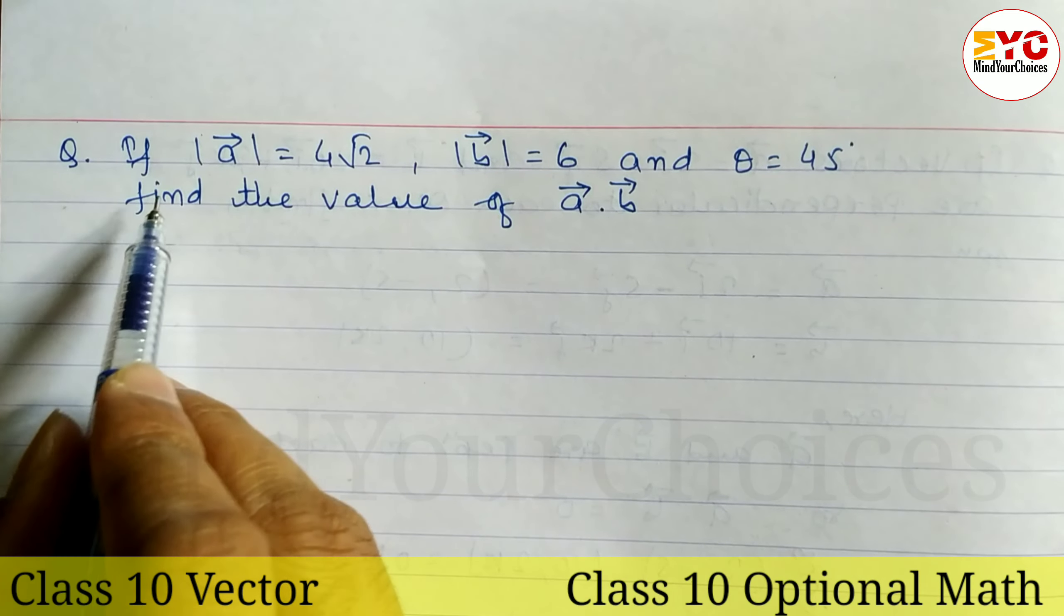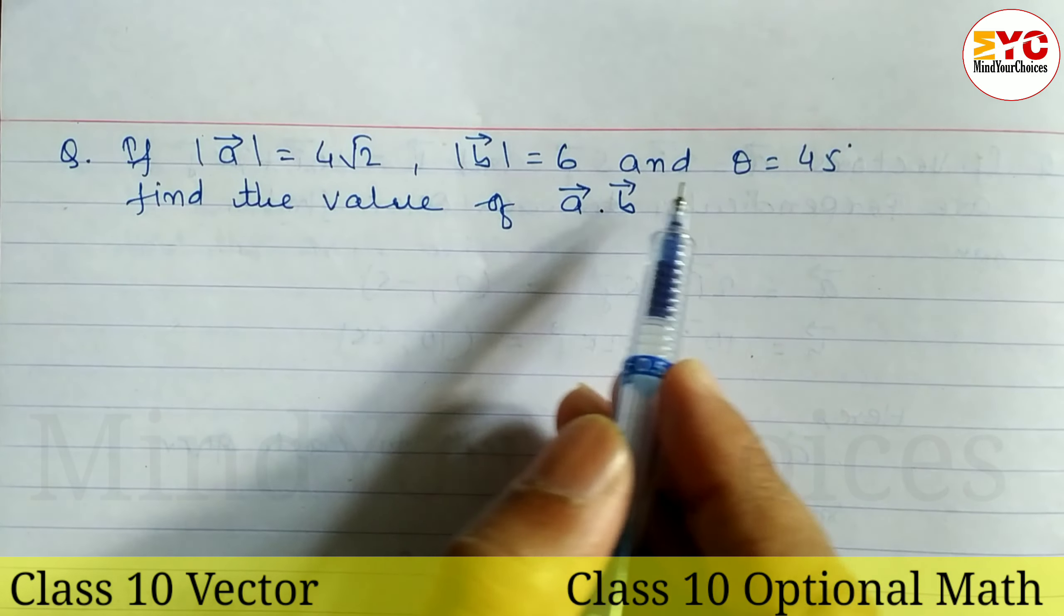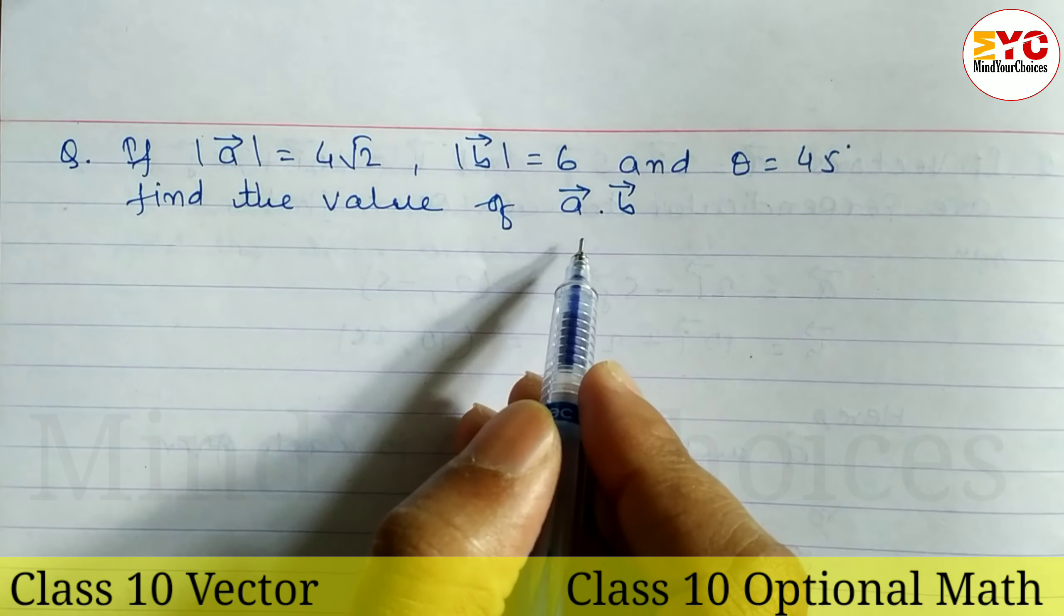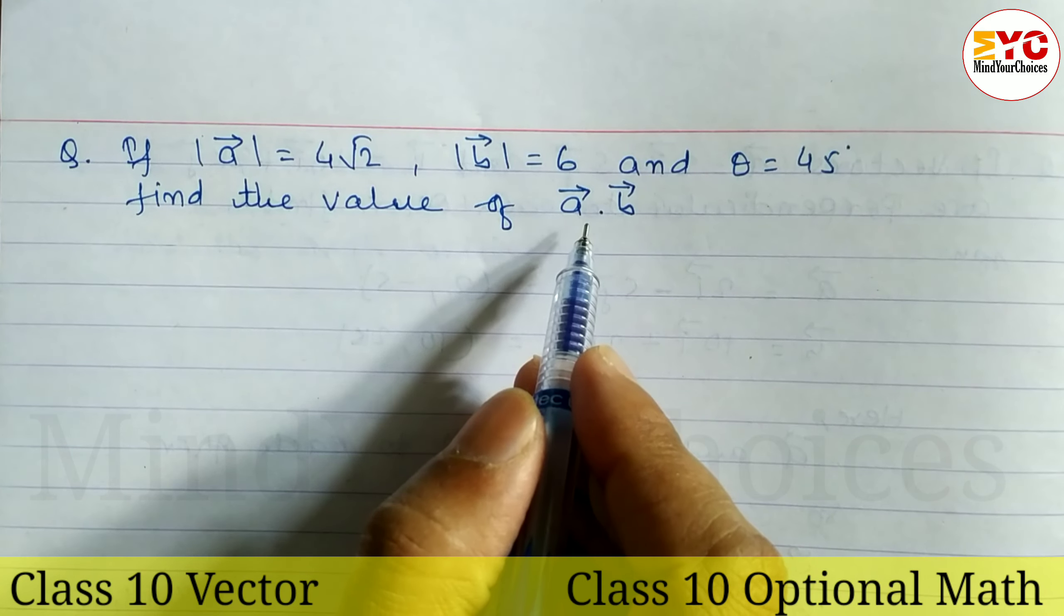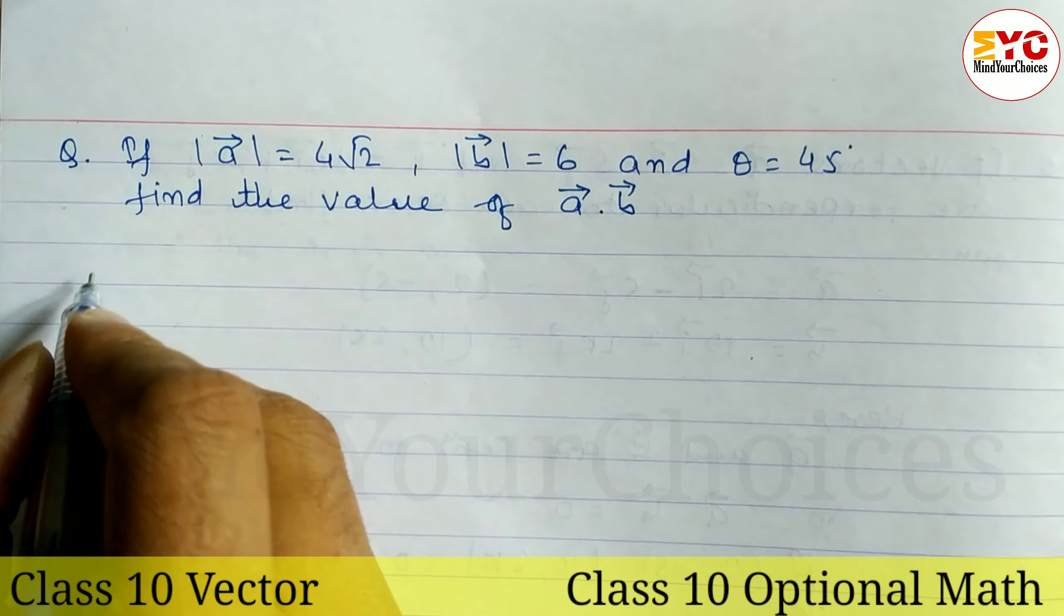This question is taken from vectors. If modulus of a is equal to 4 root 2 and modulus of b is equal to 6, and theta is equal to 45 degrees, we have to find out the value of a dot b, or the scalar product of a and b.